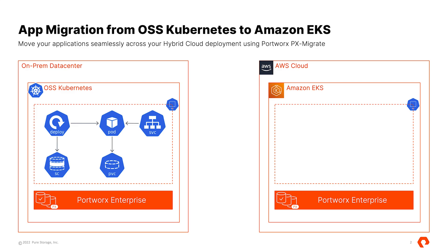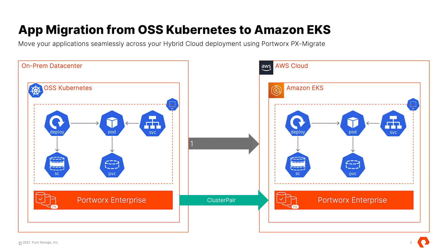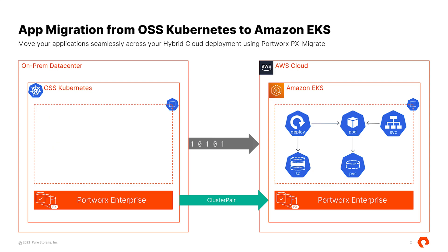The first step is configuring a cluster pair object between our source cluster and our destination cluster. Once the cluster pair object is up and running, we then create a migration specification applied against our source cluster for a specific namespace and copy not just the persistent volumes but all of our different components over to the destination site. You can define things like include resources, where we make sure that it copies everything as true. We also set a second variable called start applications as true to make sure that once the application components are copied over, we do deploy those application pods so the application can come online.